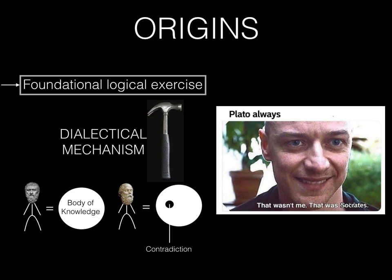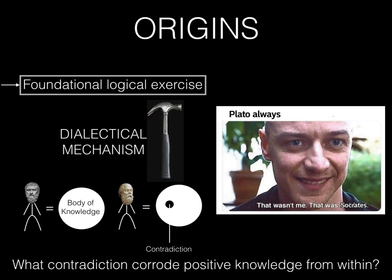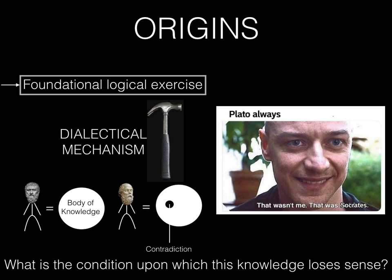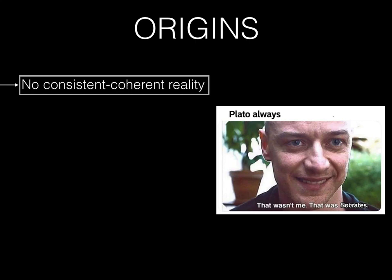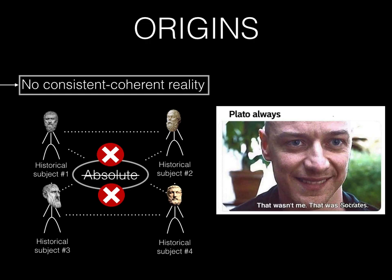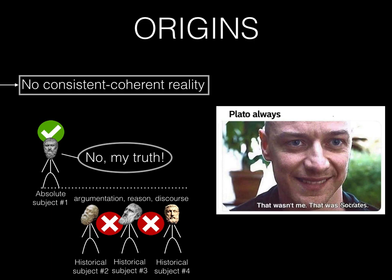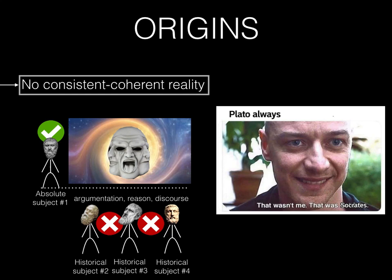Thus the dialectician would set to work identifying contradictions internal to this absolute body of knowledge. What contradiction would corrode the positive knowledge from within? What is the condition upon which this knowledge loses sense? What is the opposite point of view to this knowledge? The result was astounding: that there was actually no consistent or coherent absolute view of reality. In other words, in challenging the absolute view of reality, dialectics came to the conclusion that there was no such thing as an absolute, and that all positions were in fact historical, historically mediated by discussion between different subjectivities. Consequently, if a subject still holds on to an absolute point of view, the dialectician sees this as a type of ideological, phantasmatic mask — a mask obfuscating the fact that there is no absolute reality.